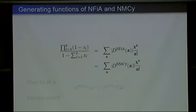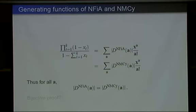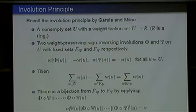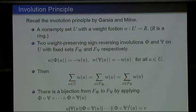This is the generating function for NFIA — no fixed point in ascending order — and no monochromatic cycles. Since two generating functions are the same, definitely the number of two sets will be the same. You might ask: is there a bijective proof for them? We tried to find one, but until now we only found some kind of artificial bijection which involves the inclusion-exclusion principle. So we gave sign-reversing involutions for each set, such that the fixed points of the involutions for NFIA and no-monochromatic-cycles are in bijection.